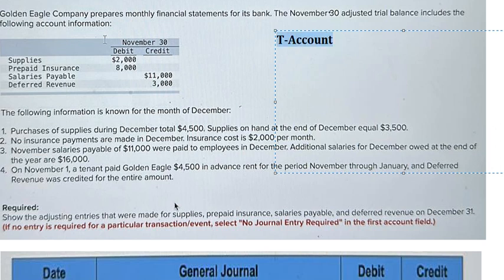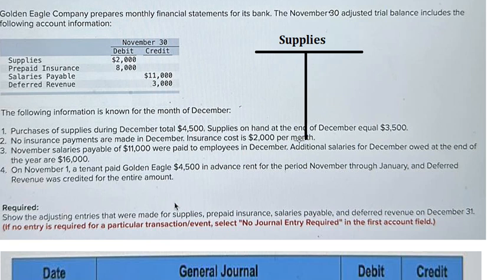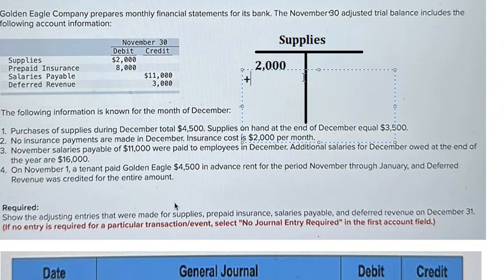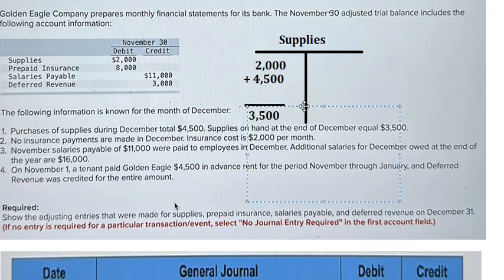So this should be about the supplies. We know that at the beginning there is about 2000 on debit. Later we purchased about 4500, which means we add more supply. Then at the end we just have only 3500.